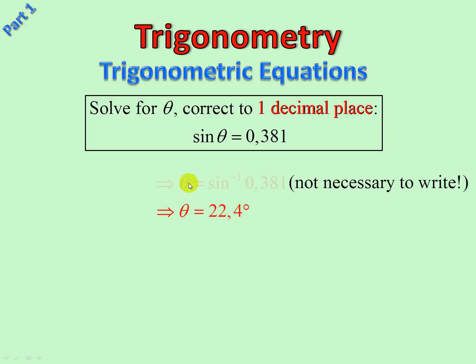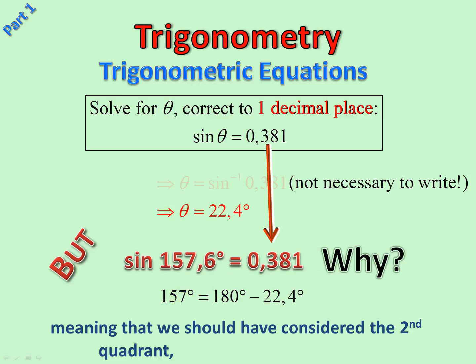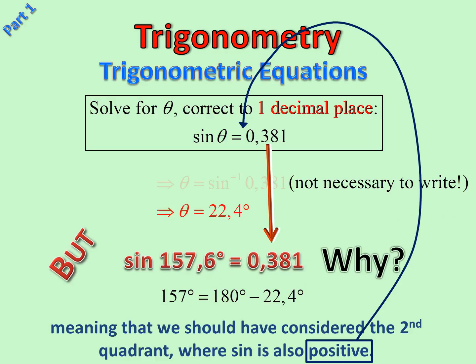We don't have to write this. In fact, it's better not to, so we can go straight from that one to here. But have a look here: sin(157.6°) = 0.381. We have only that. Why is that? Aha! Have a look. Here's the second quadrant equivalent of 22.4 degrees: 157 degrees. So in fact, we should have considered the second quadrant as well, where sin is also positive.